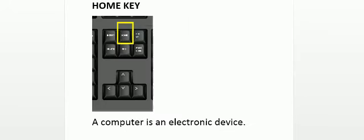Our next key is the Home key. The Home key moves the cursor to the beginning of the line. So for example, if the cursor is at the end of the line, by pressing the Home key the cursor will move to the beginning of the line. Let me press the Home key — as you can see, the cursor moved to the beginning of the line.